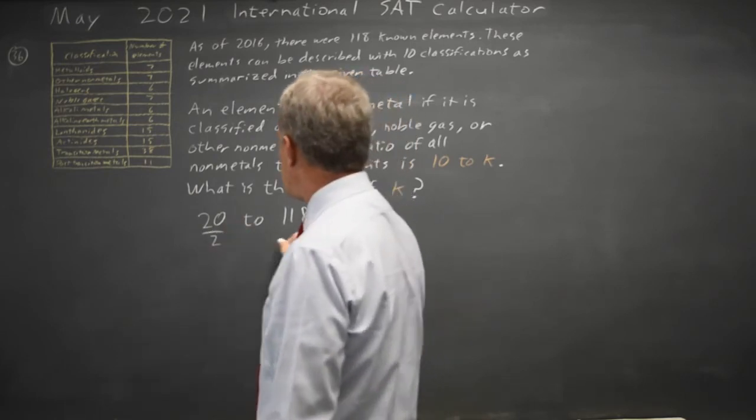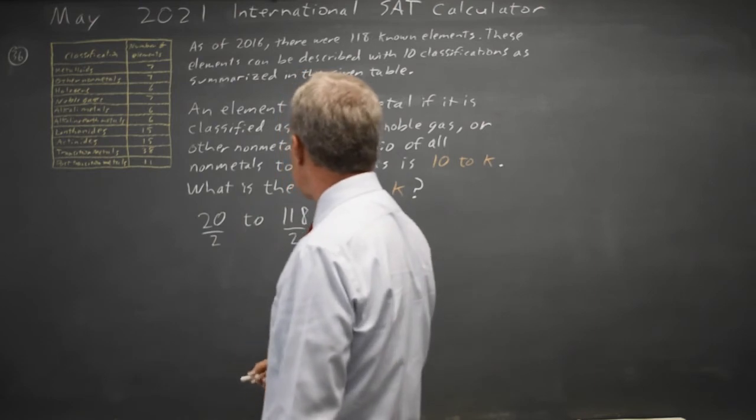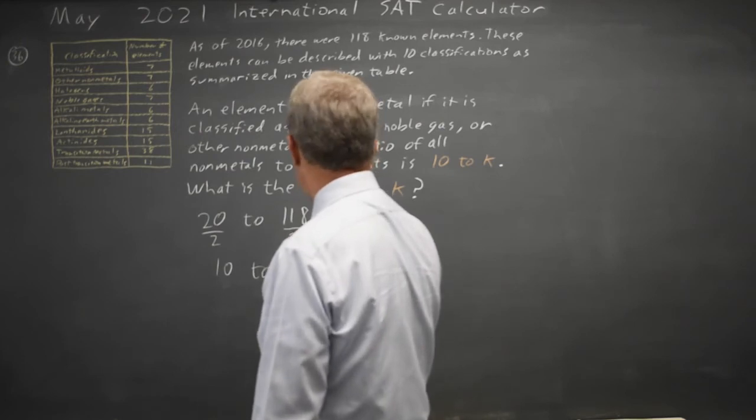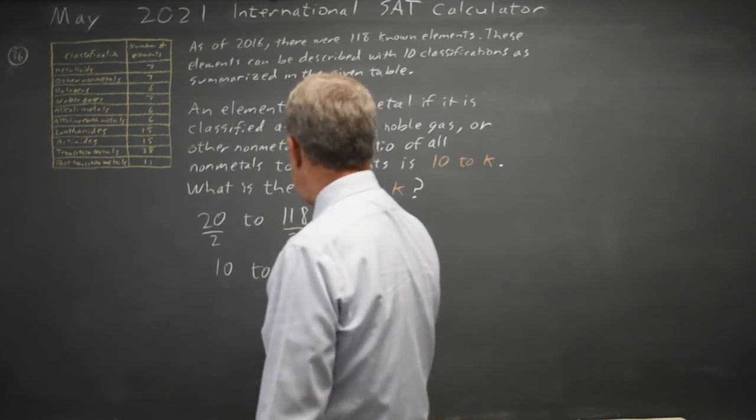If I divide both numbers by 2, I'll keep the same ratio. And now it's 10 to 59, k equals 59.